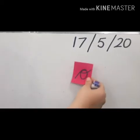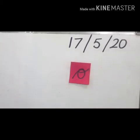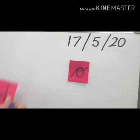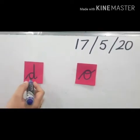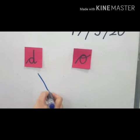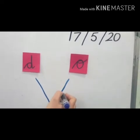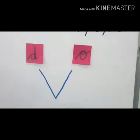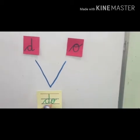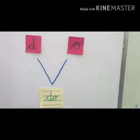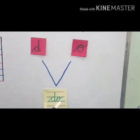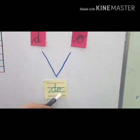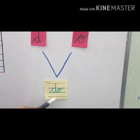Let us join a consonant before O. We will take letter D. Consonant letter D. When we join D and O, we get D, O, do. Say again: D, O, do. D, O, do.